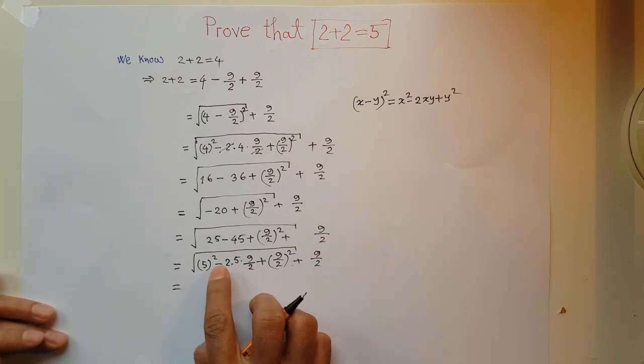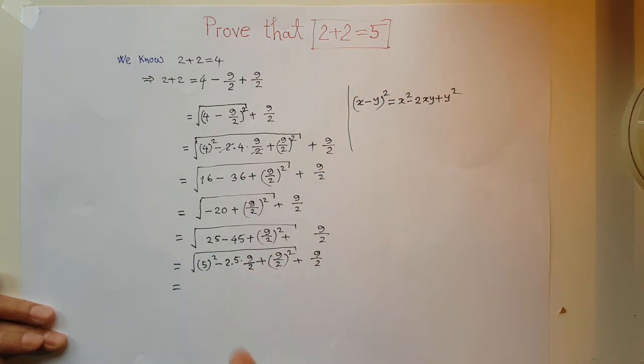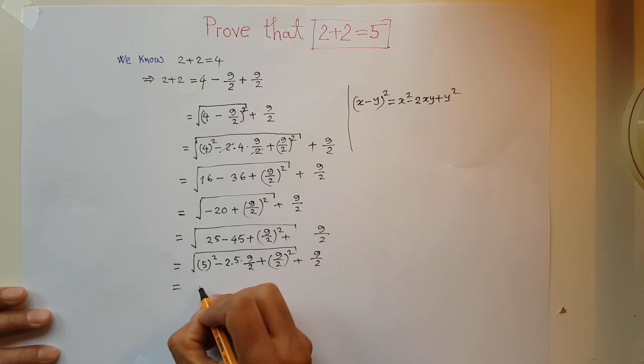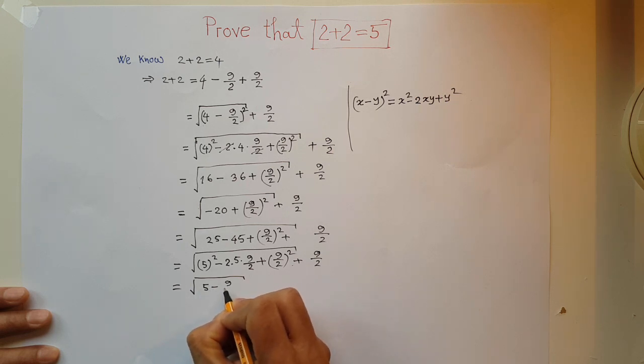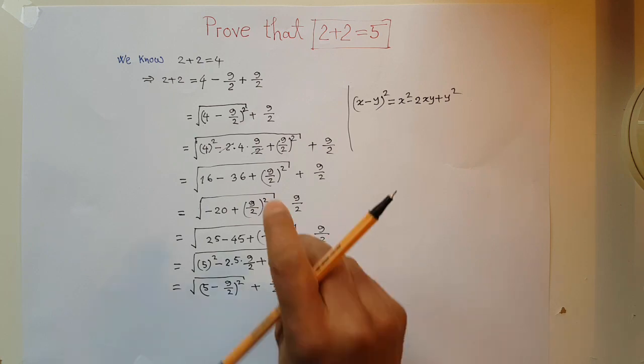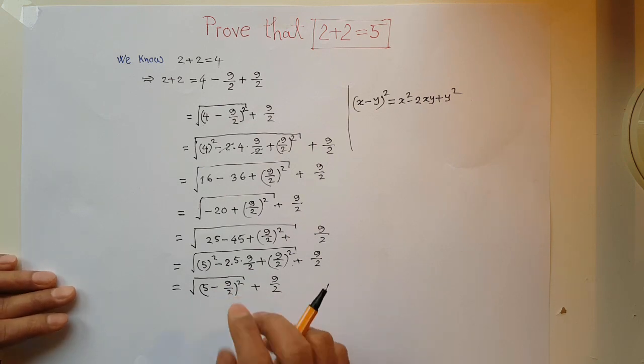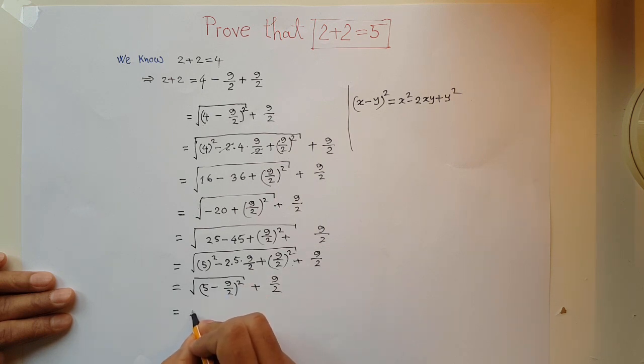Again, look at here: x square minus 2xy plus y square. Exactly, I can apply this formula here. That means x is 5, y is 9 over 2. That means I can rewrite this as square root of 5 minus 9 over 2 whole square plus 9 over 2. At this point, square and square root can cancel each other, so remaining is 5 minus 9 over 2 plus 9 over 2.